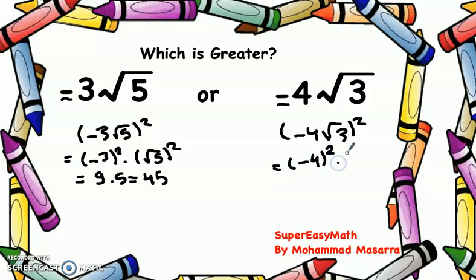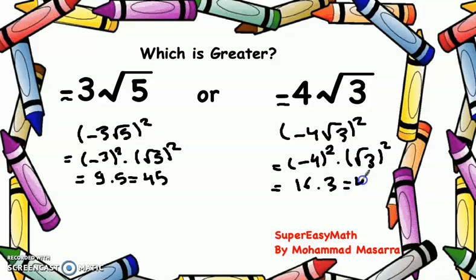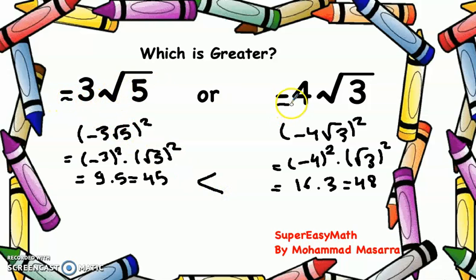That gives us 16 multiplied by 3, equal to 48. So 45 is smaller than 48. But can we say that -3√5 is smaller than -4√3? Let's think about it.